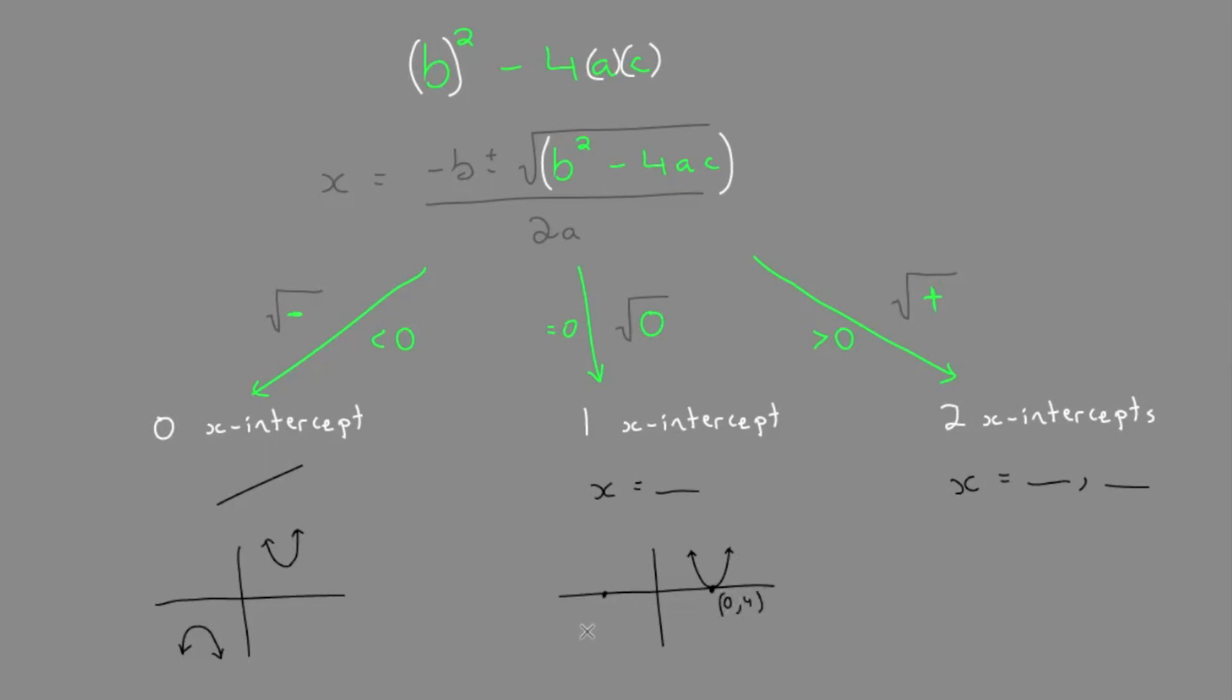Or if we have a root, let's say somewhere like this. You can see there's just one x-intercept here. We would know that when we do the discriminant.